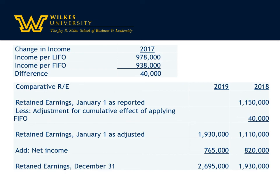We don't want anyone to pick up the old 2017 financial statements and notice a different retained earnings, so we're going to identify it with 'as adjusted.' That links the 2017 financial statements to 2018. My beginning balance in 2018, had I used FIFO all along, would be $1,110,000. With net income of $820,000, that leaves an ending retained earnings balance for 2018 of $1,930,000. This automatically transfers to beginning retained earnings on January 1st, 2019. Adding net income gives the ending retained earnings on December 31st, 2019. That is how you handle a change in accounting principle when you have to make the change retrospective.